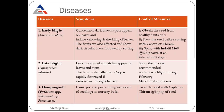To control early blight, we should obtain seeds from healthy fruits only, treat the seed before sowing with Captan or Thiram, and spray the field with Indofil to control early blight. Late blight (Phytophthora infestans) — symptoms of late blight are water-soaked areas on the leaves and stems.